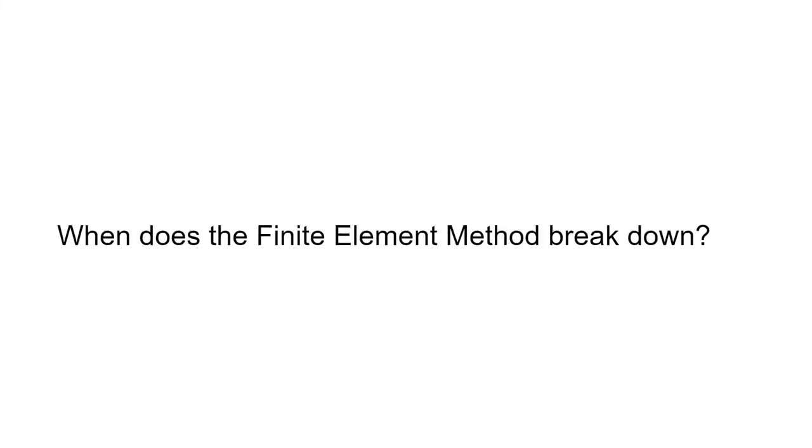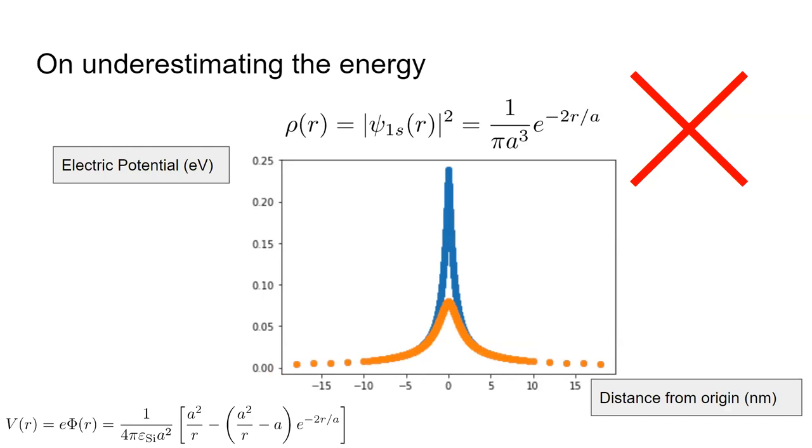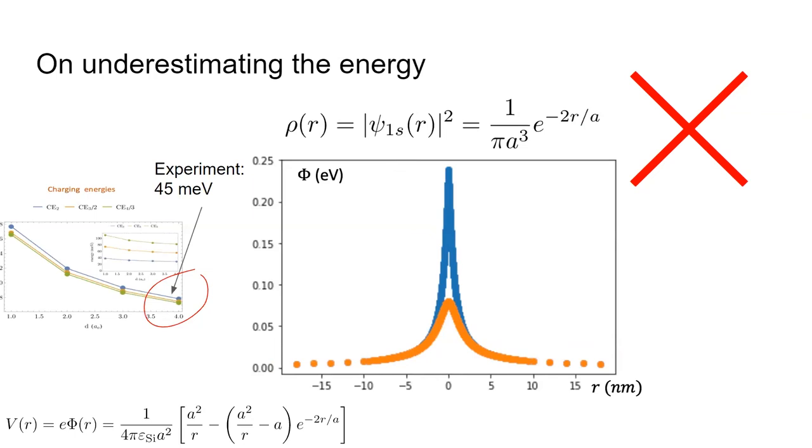Another important question to ask about any numerical algorithm is to test its limits. When does the finite element method break down? We saw this firsthand with our one-dimensional finite element method solver, where it was able to solve the Poisson equation with a Gaussian electron density. But with the hydrogen 1s orbital electron density, it broke down. In particular, it severely underestimated the electric potential when the analytical solution had discontinuity at the origin. We think that this is a possible reason for why we are underestimating those charging energies in the phosphorus trimer.